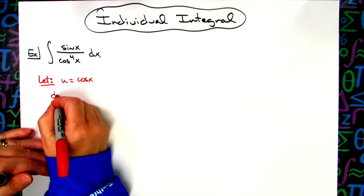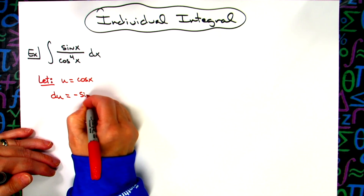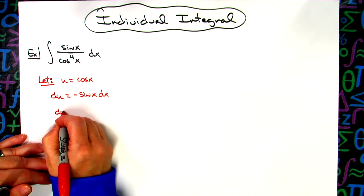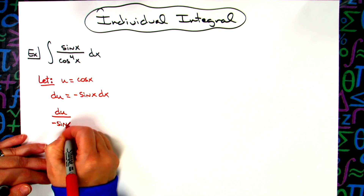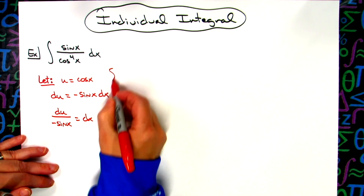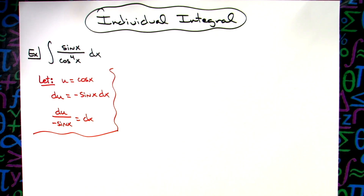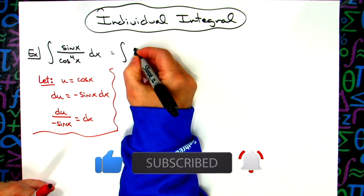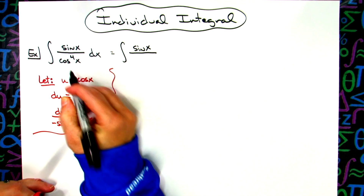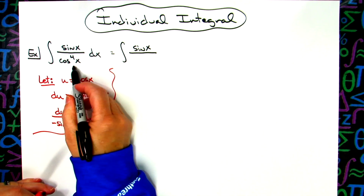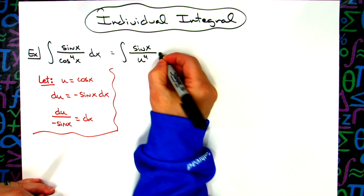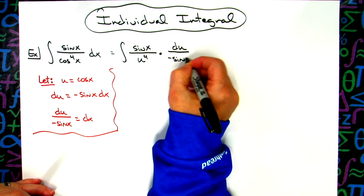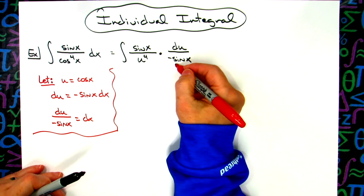I'm going to take the derivative of both sides. So we'll have du is equal to negative sine x dx. I'm going to go ahead and solve all the way down for dx. So then we'll have du over negative sine x is equal to dx. At that point we're going to come down here and start substituting into our integral.